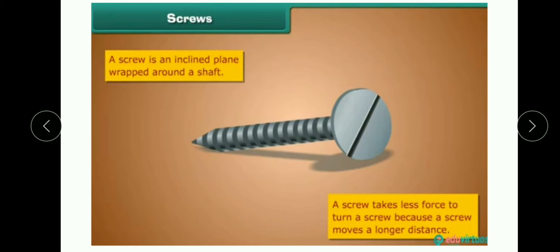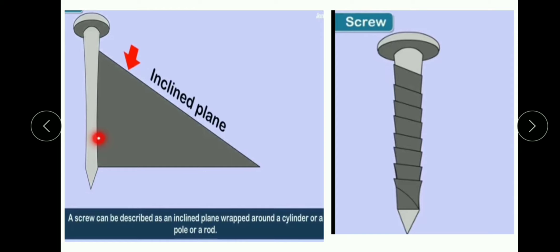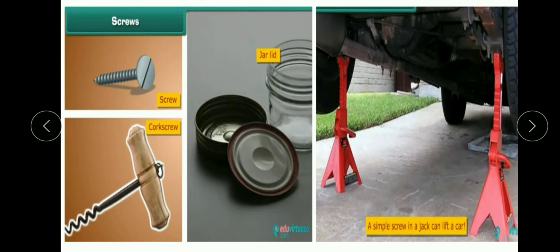Next is screw. A screw is an inclined plane wrapped around a shaft. Ek screw ek inclined plane hi hota hai jo ek shaft ke charo aur wrapped — yaani lapet hua — hota hai. Is diagram mein aap dekh sakte hain: ye ek simple shaft hai aur ye ek inclined plane hai. Agar hum is inclined plane ko shaft ke charo aur lapet den to wo ek screw ki tarah dikhega — isi tarah ek screw tayaar hota hai. Screw ke examples hain: nut bolt, cork screw, jar lid, aur jack screw jisse hum gadiyon ko lift karte hain.